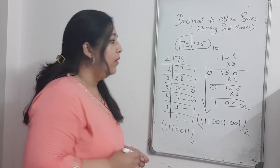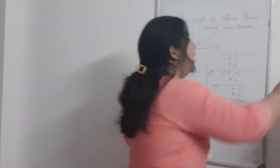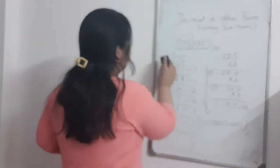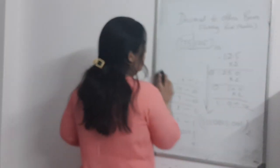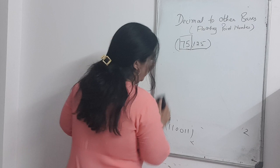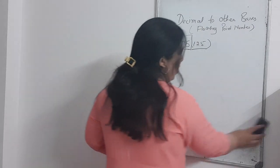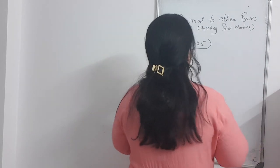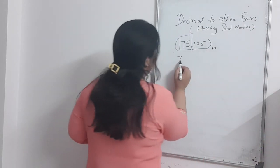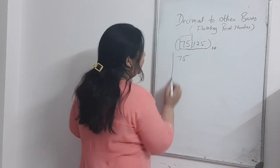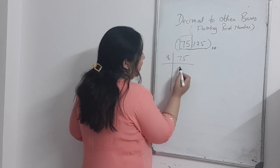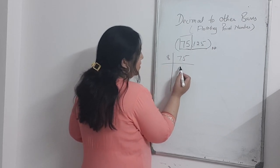Now I will erase it and start the octal conversion. I have to divide 75 by 8. So 75 divided by 8 — 8 times 9 is 72, so the quotient is 9 with a remainder of 3.